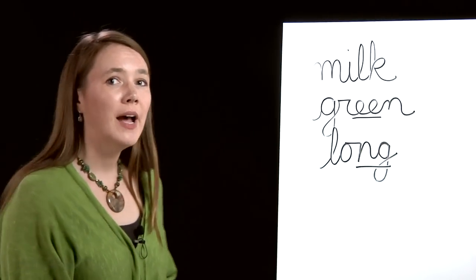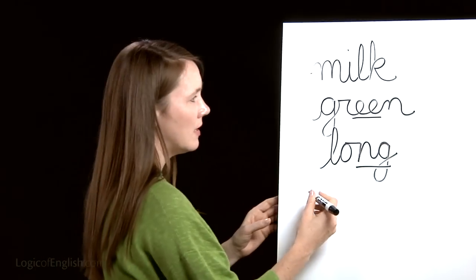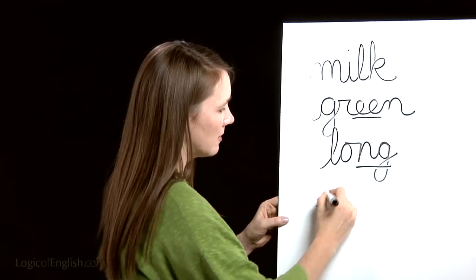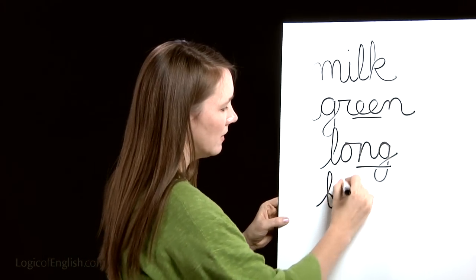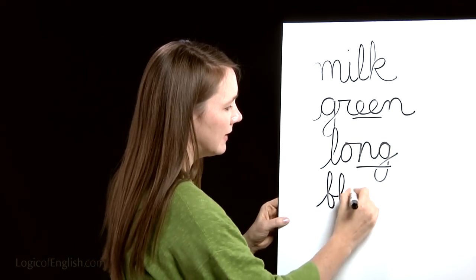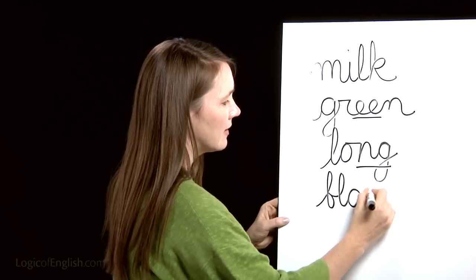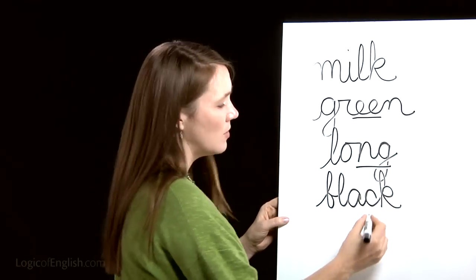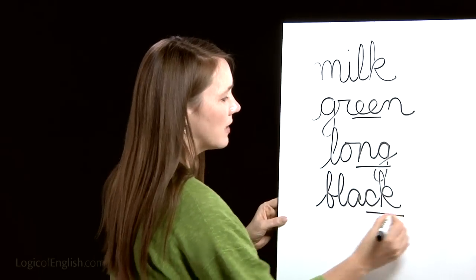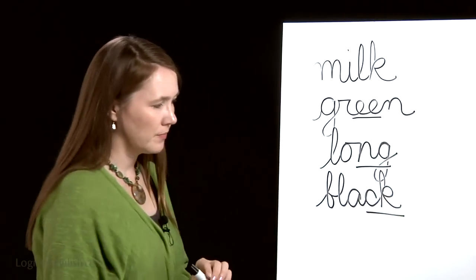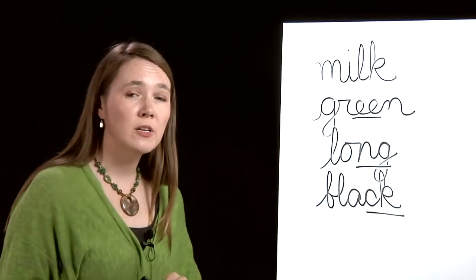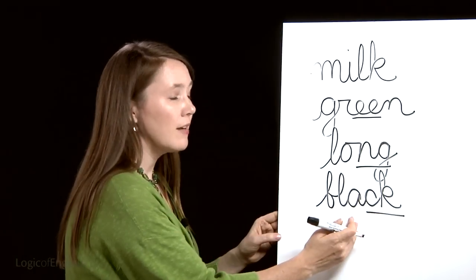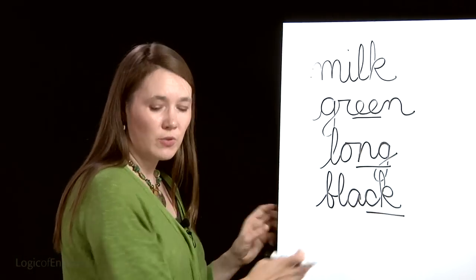Go ahead and write 'black,' then help me write it: B-L-A-CK. We'll underline the two-letter K. Why did we use two-letter K? Because it's after a single short vowel. The tenth word is 'three' — three dogs slept. Go ahead and write it. We'll underline the 'th' and the 'ee.'